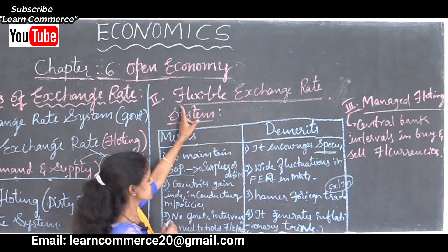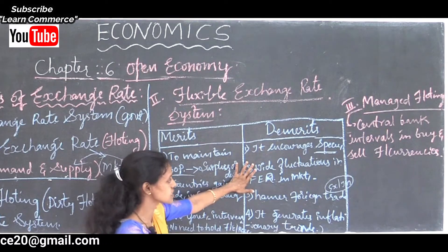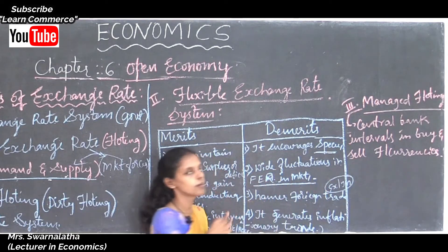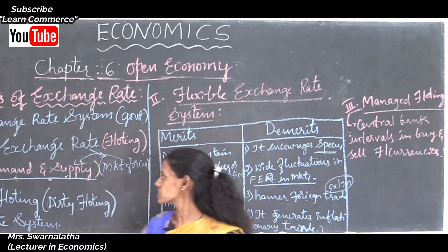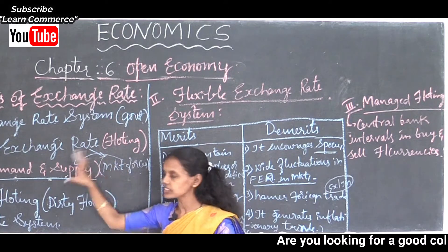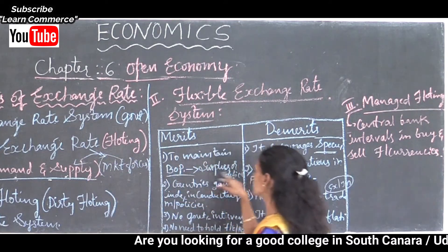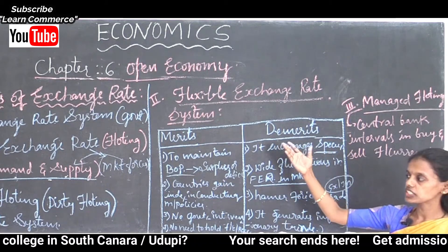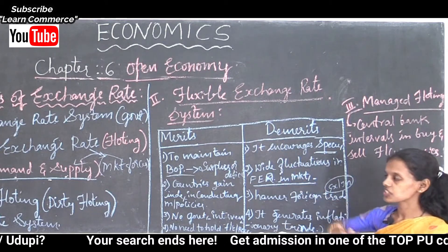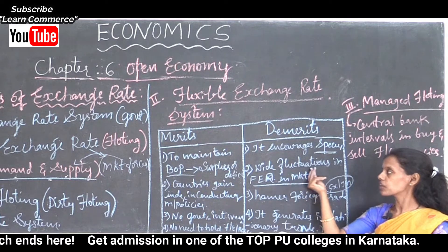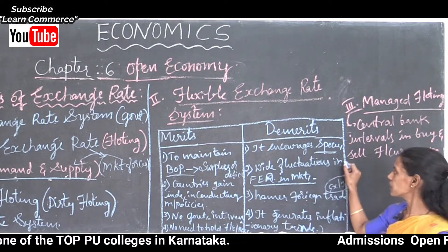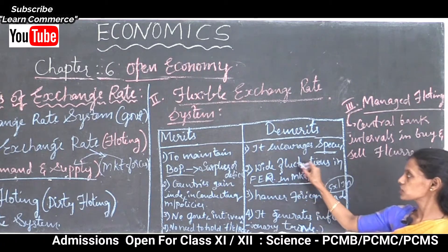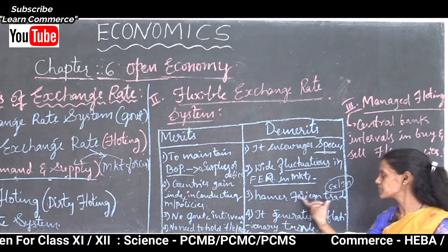One more drawback of the flexible exchange rate system is wide fluctuations in the foreign exchange rate in the foreign exchange market, due to wide changes in market forces — demand and supply. If there is a change in demand and supply, automatically there will be a change in the foreign exchange rate. If demand increases, foreign exchange rate decreases; if supply increases, foreign exchange rate also increases. Wide variations in foreign exchange rates lead to harmful effects and hammer foreign trade.